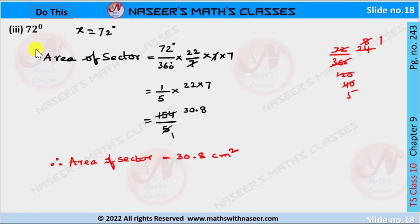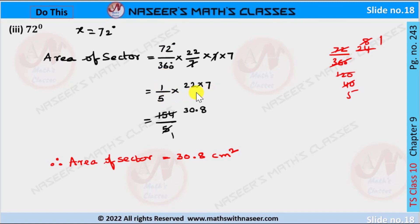Now we substitute x equal to 72 degrees in the area of sector formula. We write 72 by 360 into 22 by 7 into 7 into 7. We cancel 7 in the numerator and 7 in the denominator. After dividing 154 by 5, we get 30.8. Therefore, area of sector is equal to 30.8 centimeter square when x is equal to 72 degrees.